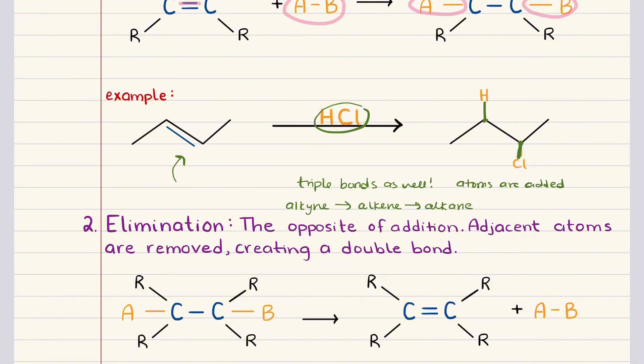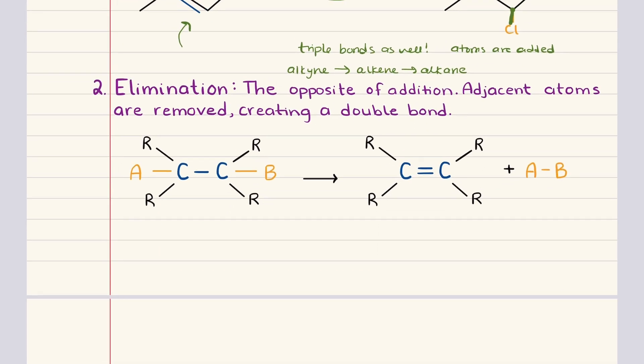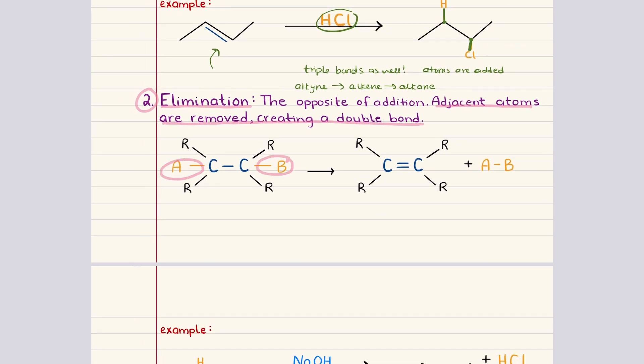From here, it makes sense to transition directly into the opposite process, which is called elimination. Elimination reactions reverse the behavior we just described by removing atoms from adjacent carbons in a molecule, and that will result in the formation of a carbon-carbon double bond. So when two groups are removed, the electrons that once formed the single bonds reorganize to form a pi bond between the two carbons.